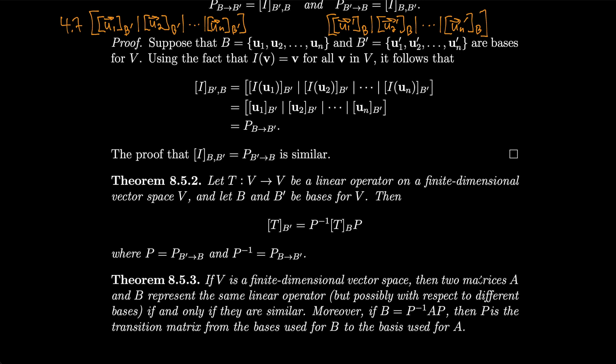That brings us to our next theorem. If V is a finite dimensional vector space, then two matrices A and B represent the same linear operator — but possibly with respect to different bases — if and only if they are similar. Moreover, if B equals P inverse AP, then P is the transition matrix from the bases used for B to the bases used for A.